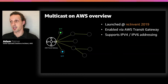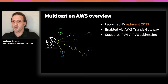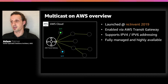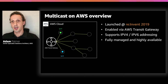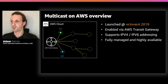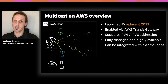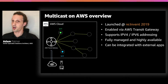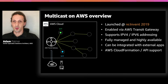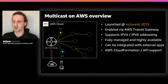There's support at the network level for both IPv4 and IPv6 addressing. Being part of Transit Gateway means the service is fully managed — as a customer, all you need to do is define your configuration and let AWS manage the steady-state operation. This service can be integrated with external applications through hybrid integration techniques, and there's support for CloudFormation and API support as well, so if you're building via pipelines or scripts, that's covered.